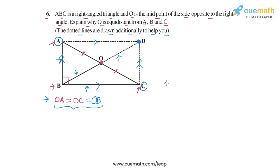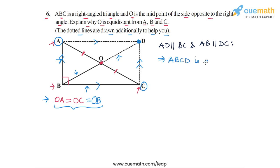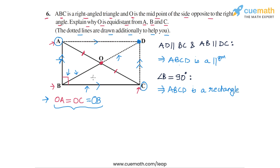This construction gives us parallelogram ABCD, because we have drawn AD parallel to BC and AB parallel to DC. Both pairs of opposite sides in ABCD are parallel to each other, so ABCD is a parallelogram. Also, one of the angles in ABCD is 90 degrees — the angle at B is 90 degrees — and this means that all the other angles of ABCD will also be 90 degrees, making ABCD a rectangle.